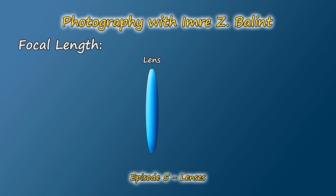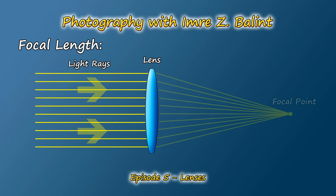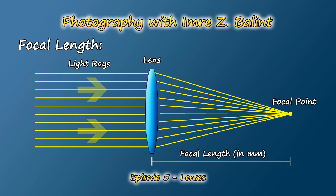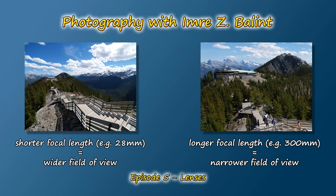Before I get into types of lenses, I want to cover what focal length means. When light rays pass through a lens, they converge into a spot aptly named the focal point. The focal length of a lens is essentially the distance in millimeters between that lens and that focal point. I say 'essentially' because the vast majority of lenses are comprised of multiple lens elements, so the starting point for measurement may vary. But for what most photographers need to know, lenses with shorter focal length have wider fields of view than those with longer focal length.